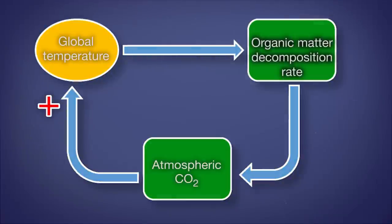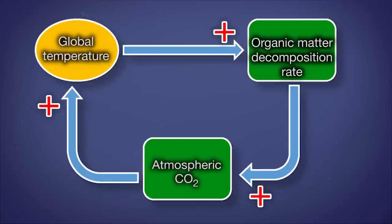Here's an example of a positive feedback system with temperature and decomposition. Higher levels of carbon dioxide promote higher temperatures. Higher temperatures lead to faster decomposition. Faster decomposition boosts the rate at which CO2 is added to the atmosphere, and that cycle continues in a positive way.